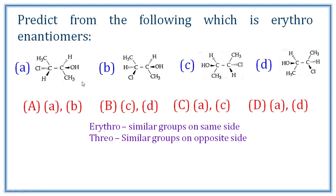There are also threo isomers. We need to convert the structure into a Fischer projection. In the Fischer projection, the methyl-methyl groups are eclipsed. We rotate the bond so that hydroxyl goes to the back side and hydrogen to the front side. The result shows chlorine and hydroxyl on the same side, and hydrogen and hydrogen on the same side — confirming the erythro isomer.